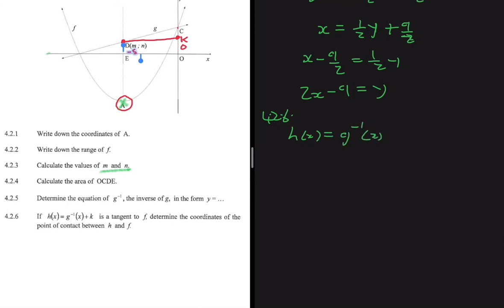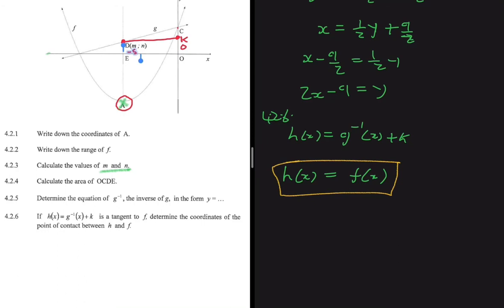For 4.2.6, h(x) = g⁻¹(x) + k is a tangent to f. We need to determine the coordinates of the point of contact. We can't simply set h(x) = f(x) because of the unknown k. However, we know that at the point of tangency their gradients are equal, so we equate the derivatives.